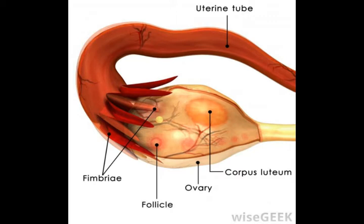The ovaries in women also contain the simple cuboidal epithelium tissue, as they are constantly secreting hormones such as estrogen and progesterone to aid in secondary sexual characteristics and the natural cyclic changes in females. Each cubed cell of the simple cuboidal tissue contains a spherical nucleus in the middle which dictates the role and function of the tissue as a whole.